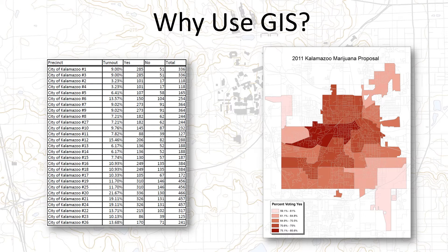You'll want to use GIS and maps whenever you have something with a spatial component to it. The table on the left doesn't mean much to anybody unless they are stone-cold election junkies in Kalamazoo, but if you look at the map on the right, you can see that there is a clear spatial pattern going on with the voting returns. This is not conveyed if you only have the table in your project.